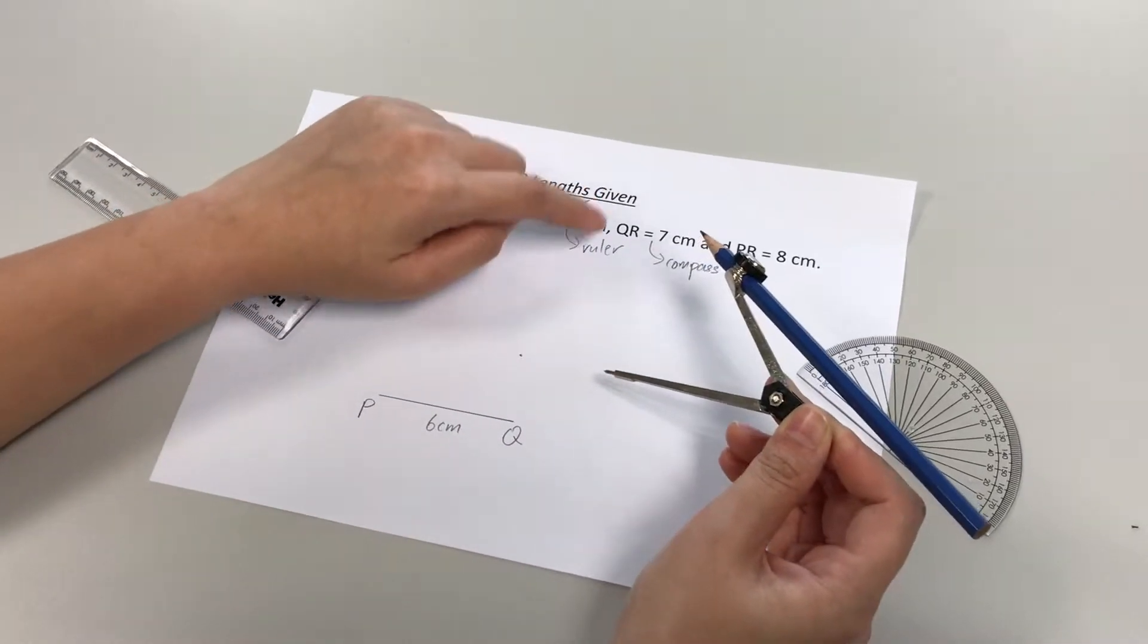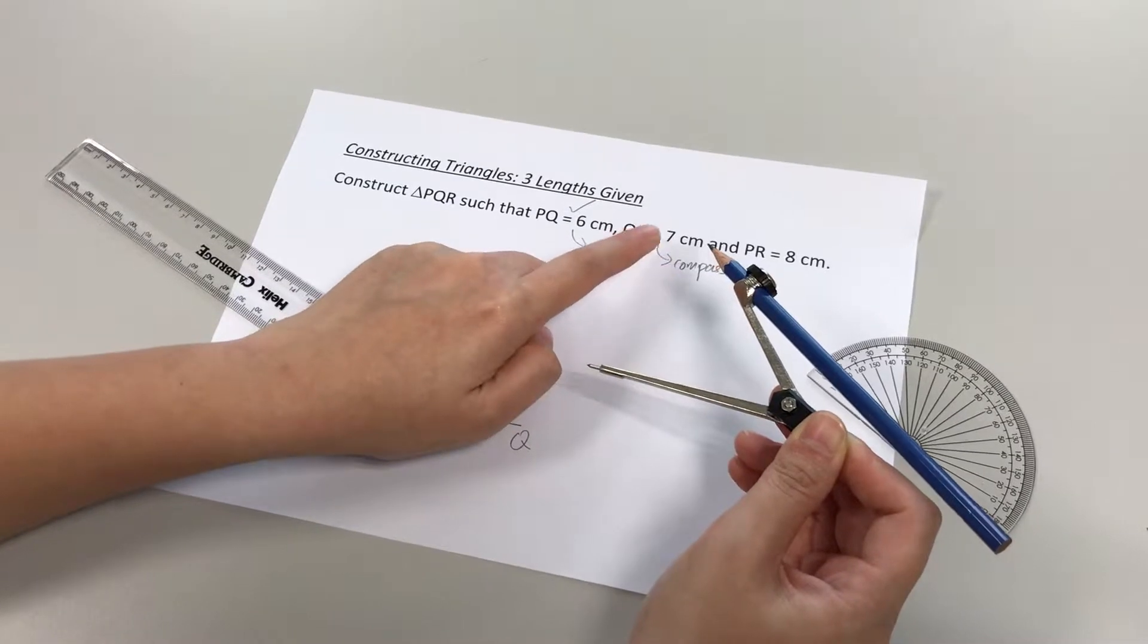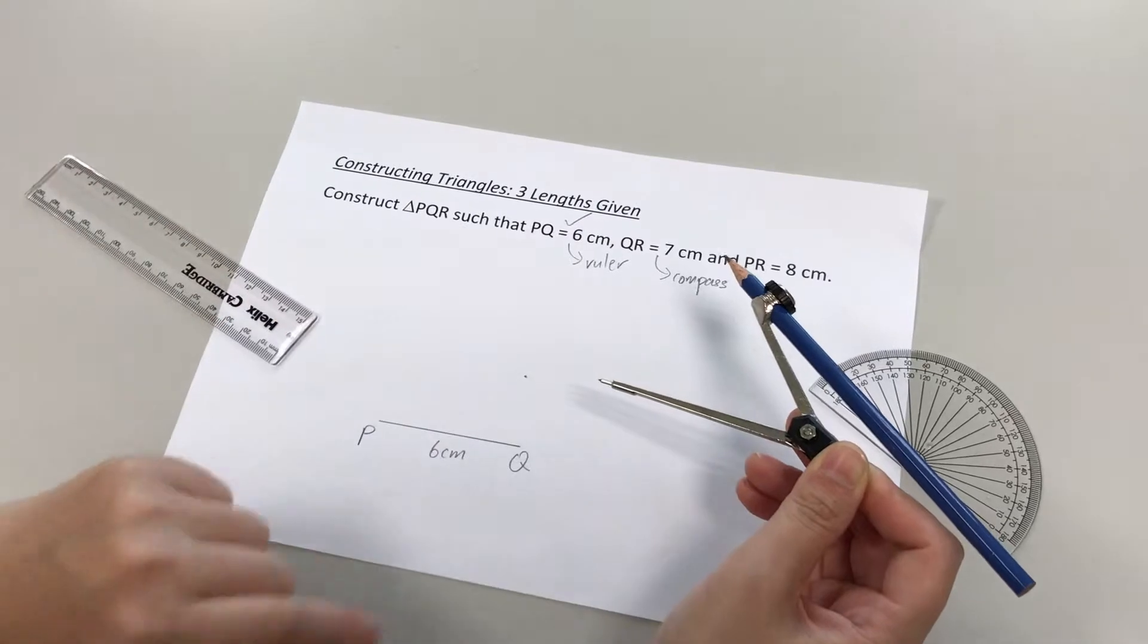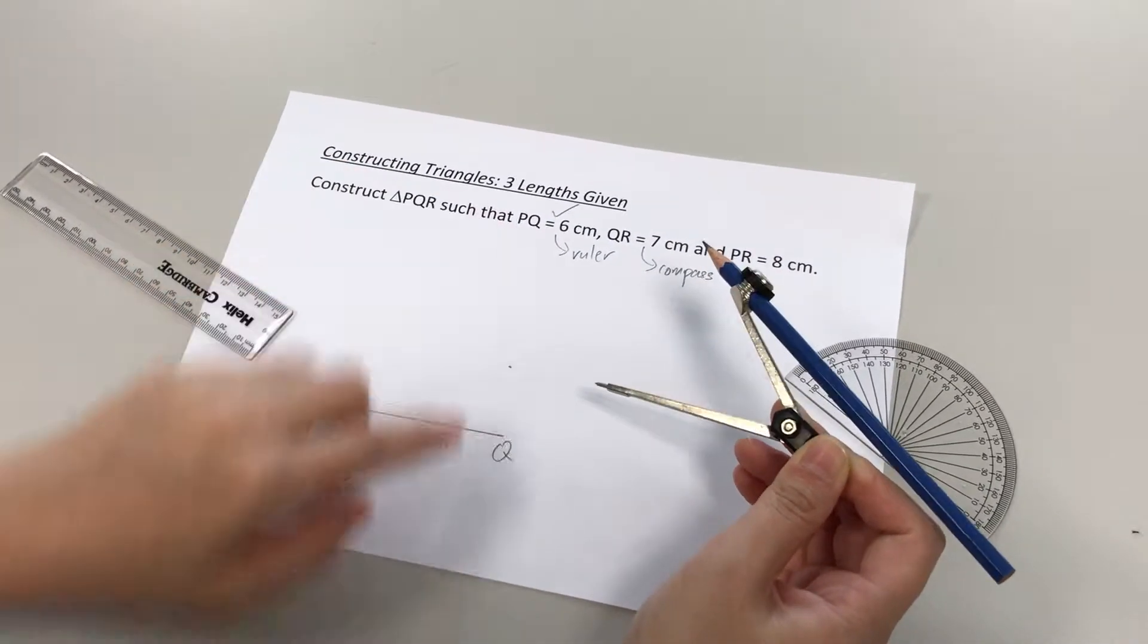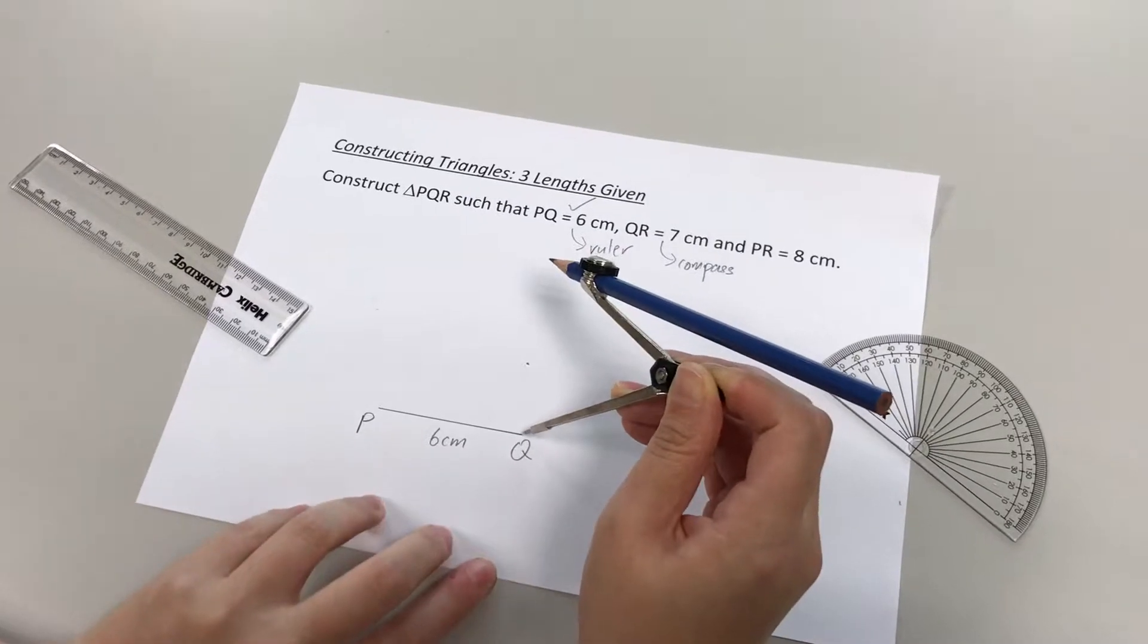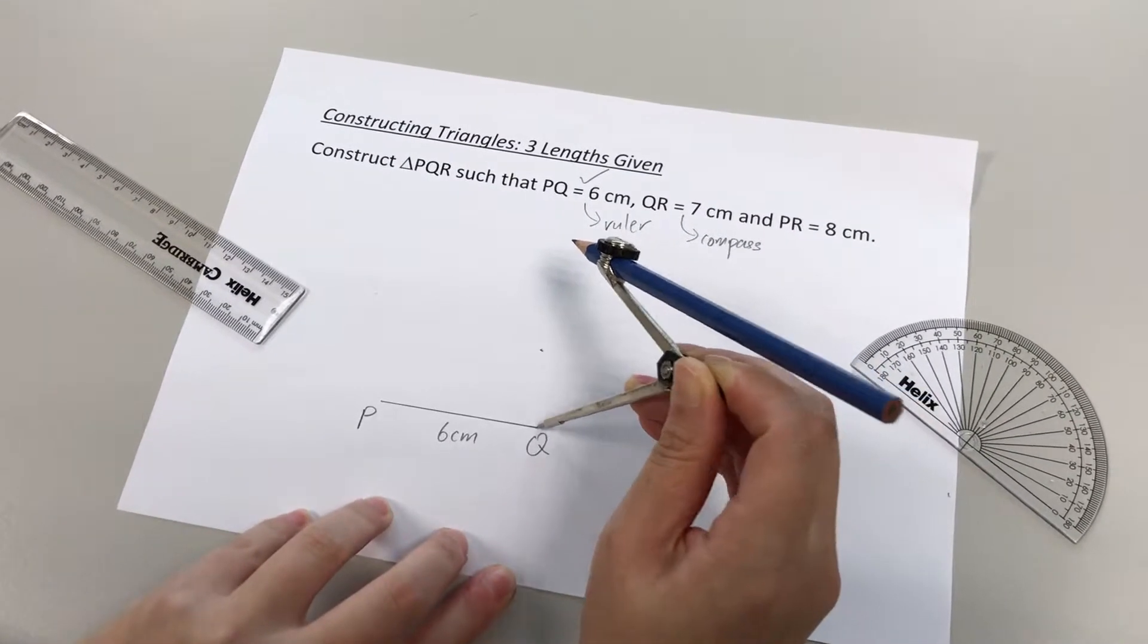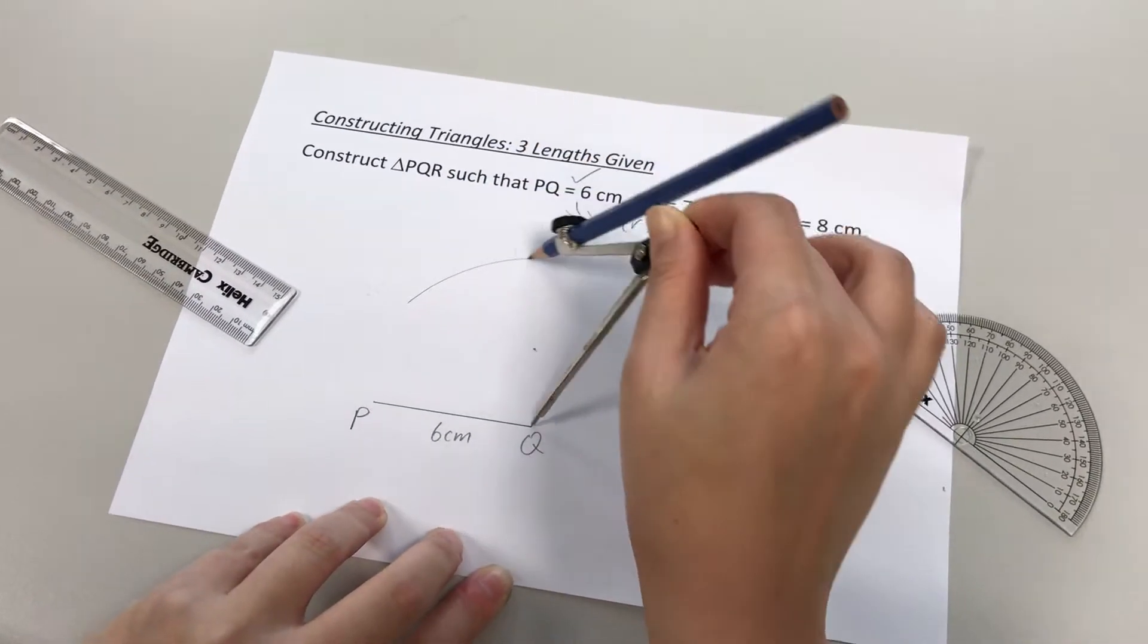All right, next, you need to decide, where am I going to put the needle now? All right, 7cm is to be used to draw QR. So you can either put the needle at Q or R. Okay, we only have P and Q. We do not have point R yet, so obviously we are going to put the needle at point Q. All right, over here like this, put the needle at Q. And we will draw a curve.